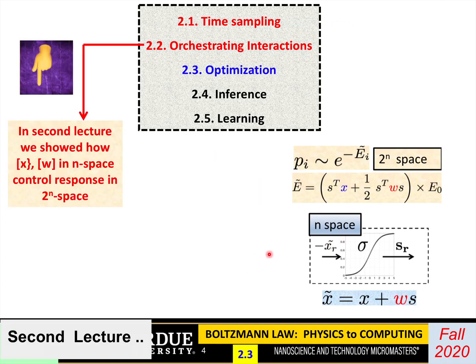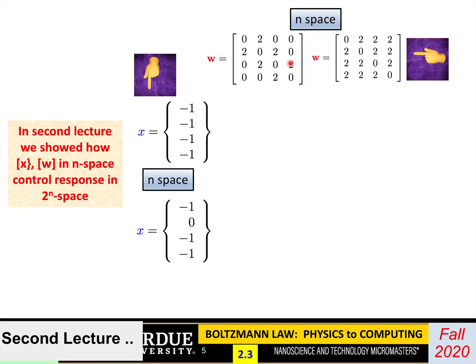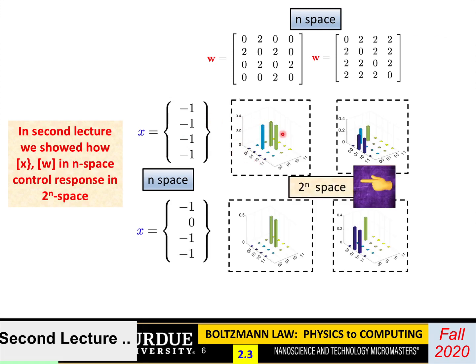In the second lecture, we showed how these parameters, the x and the w, which are in n space, control the response in this 2 to the n space. For example, I think we took these 2 examples with just 4 of these neurons. x was a 4 component column vector and the weight matrix was 4 by 4. We showed how, if you look at the response in state space, which is 2 to the power of 4, you can have peaks at different places in that 2 to the n space, depending on what you choose.